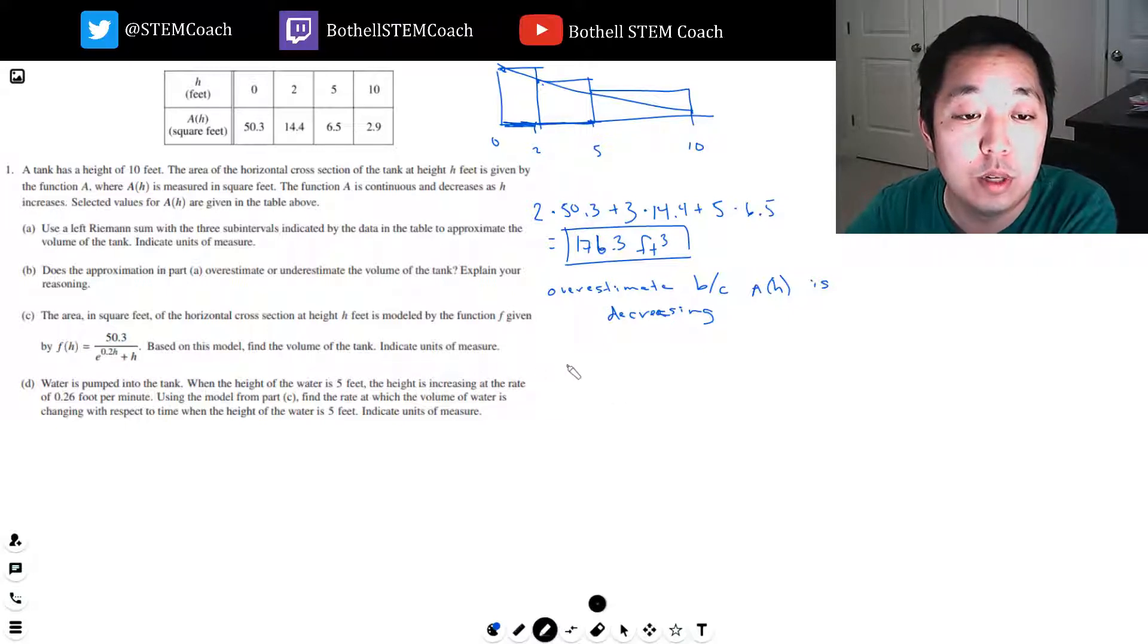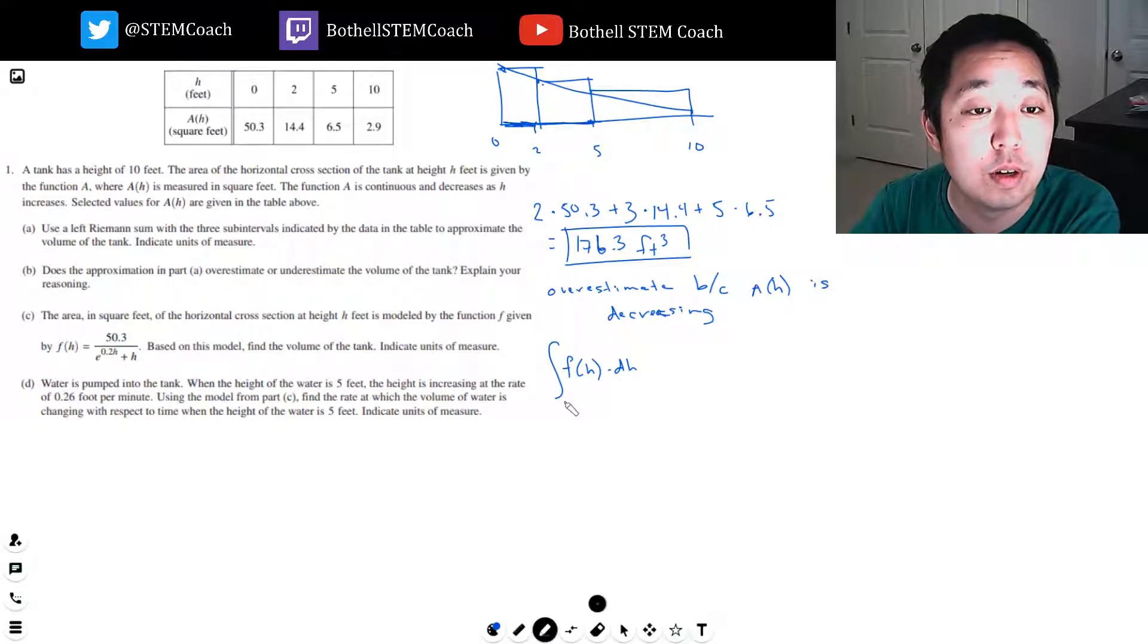Okay, so I want to take F of H as the height, right? So if I think of it as there's a slice, I'm going to do F of H times DH. This is the area. Yeah, this is the area times the height, so this is volume. So this is the volume of a particular slice. I want the volume over the whole thing from 0 to 10.